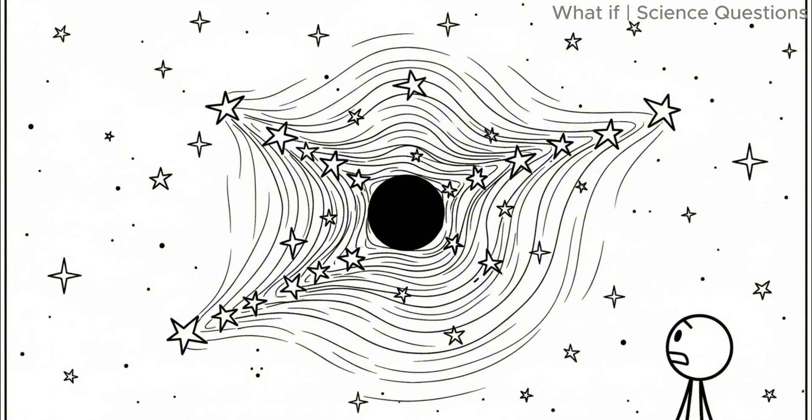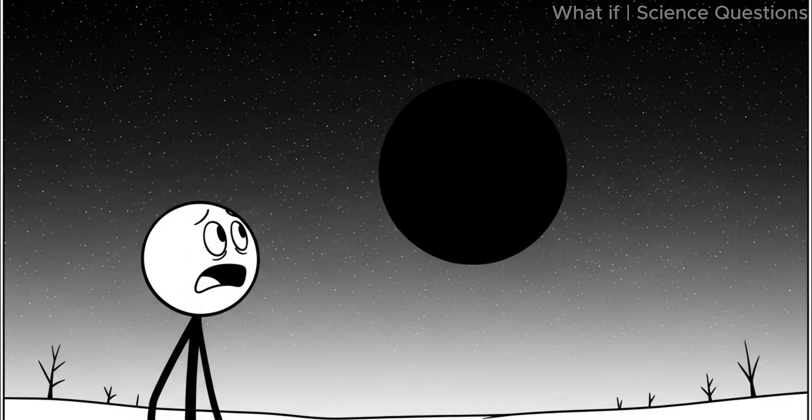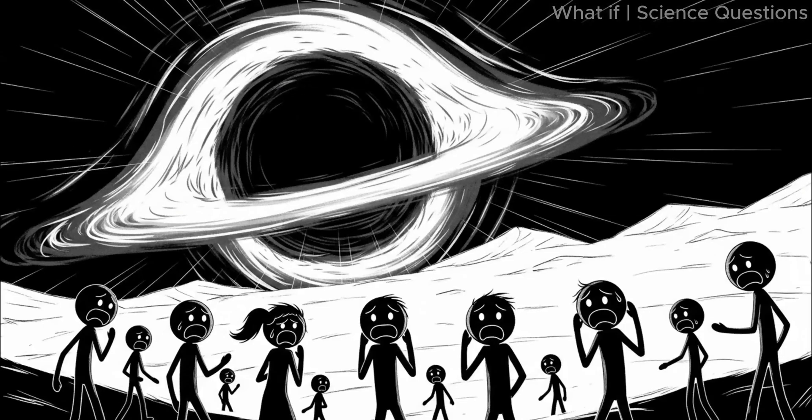As light bent around the approaching black hole, distant stars would appear warped like reflections in rippling water, a phenomenon called gravitational lensing. To the naked eye, it might look like the stars themselves were dancing strangely. And then, you'd notice something even more terrifying. A patch of pure blackness, a spot in the sky where no stars were visible at all. That would be the black hole, an object literally erasing light from existence. Even at this stage, humanity would have no way to stop it. We could only watch and prepare for the inevitable.